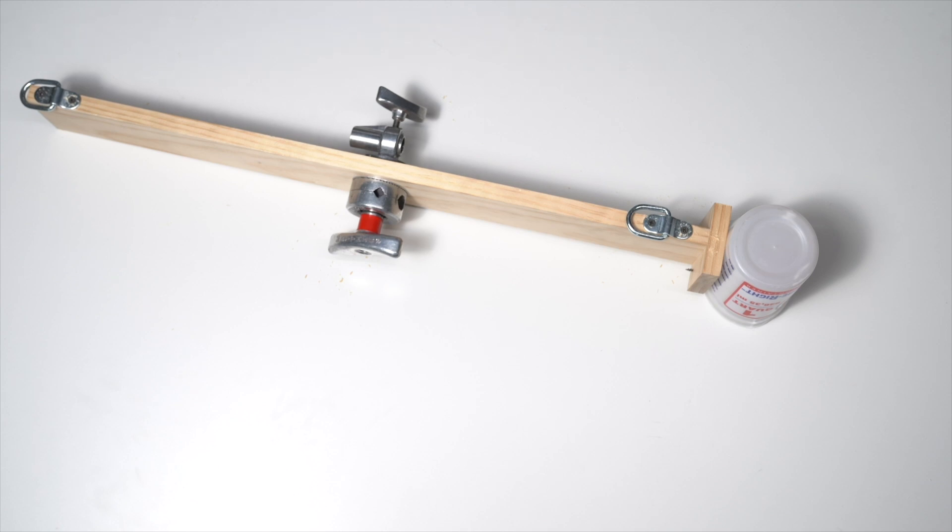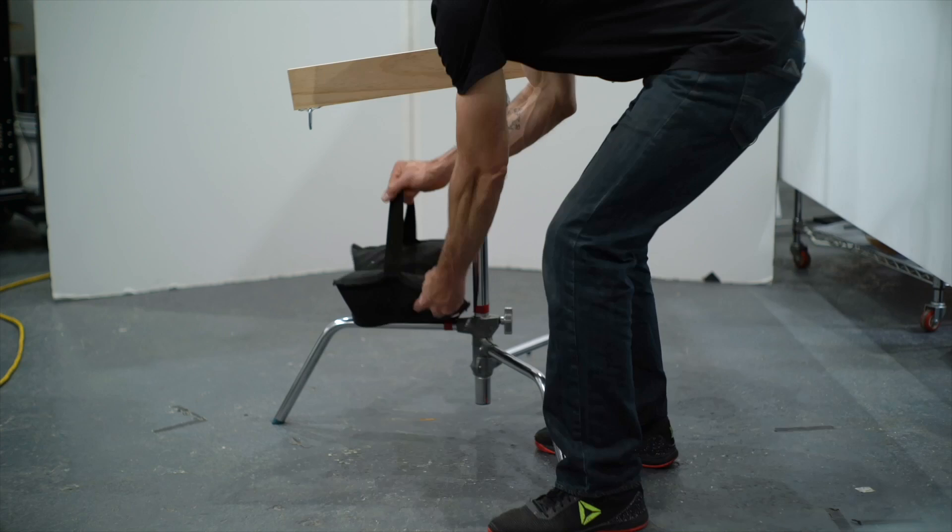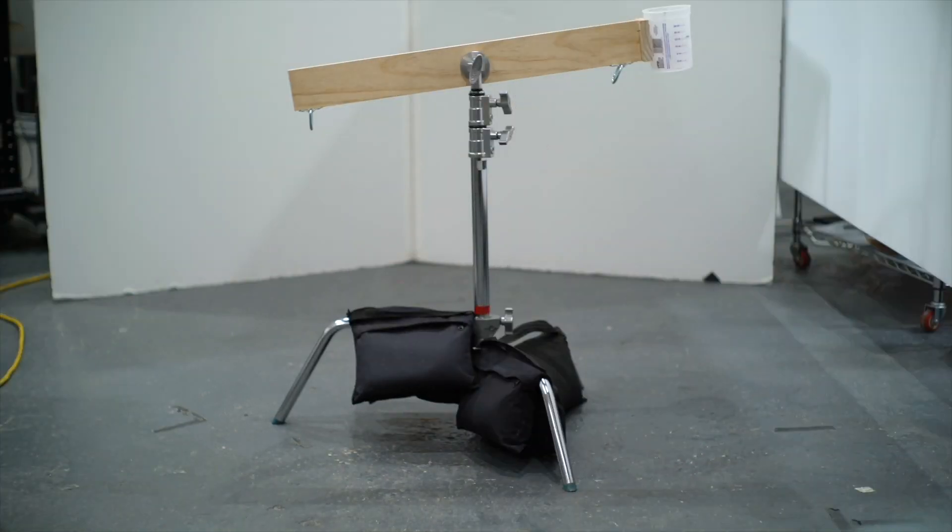So now that the catapult arm is all assembled, we can mount it to a c-stand on set. We got our c-stand bagged down so it doesn't move around. Next, we need to add the bungee cords.